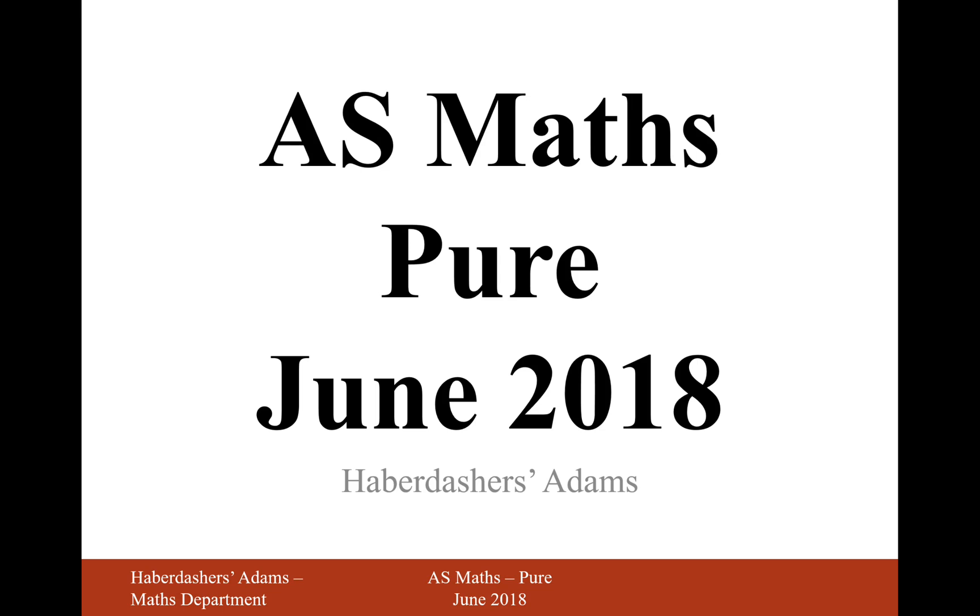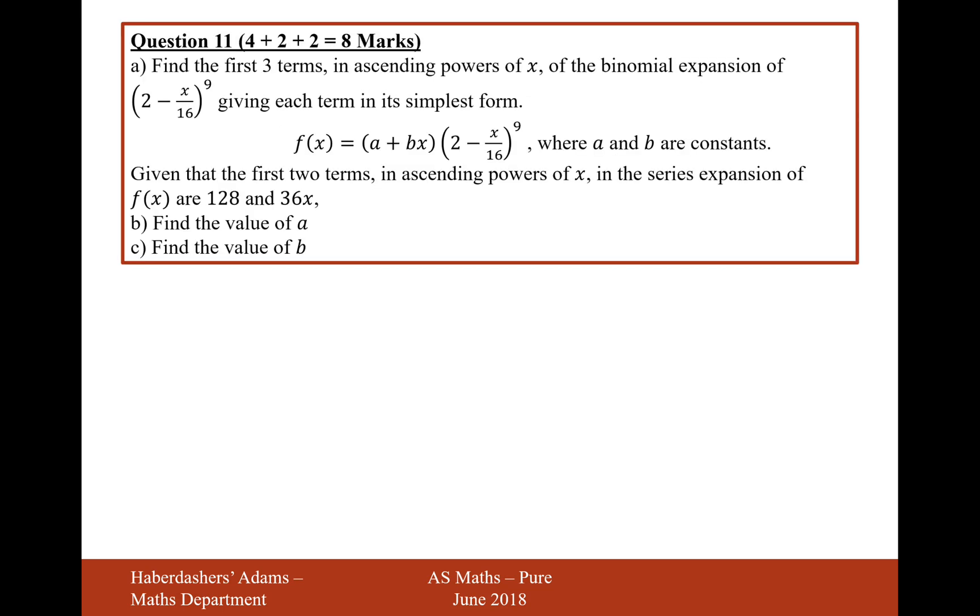Hello there and welcome to the June 2018 paper. Here we're looking at question 11. So, part A, the first three terms in ascending powers of x of the binomial expansion 2 minus x over 16 to the power of 9, giving each term in its simplest form.